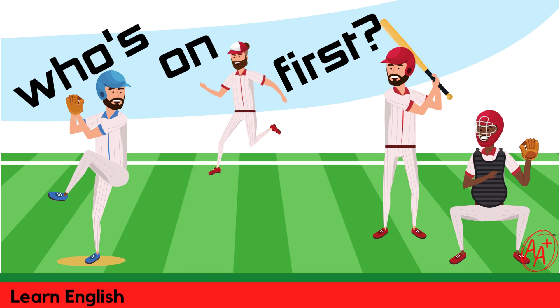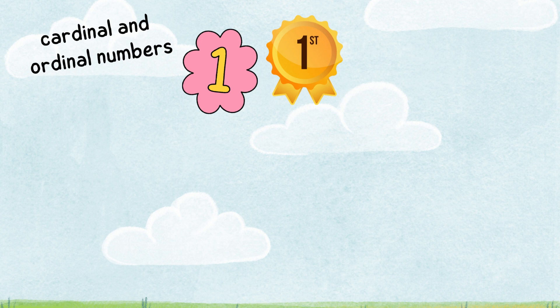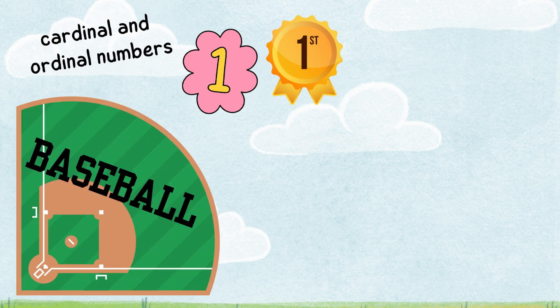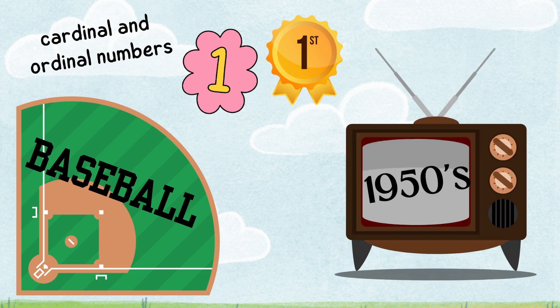Welcome! Come learn English with Afghan Advantage. Today we will talk about cardinal and ordinal numbers — what's the difference between a 1 and a 1st? We're also going to talk a little bit about baseball, which is perfect since summer is a great time to play, and baseball is very popular in America. Then we're going to talk a little bit about 1950s TV. You'll have to stay to the end to learn why — I know it sounds weird but it will make sense.